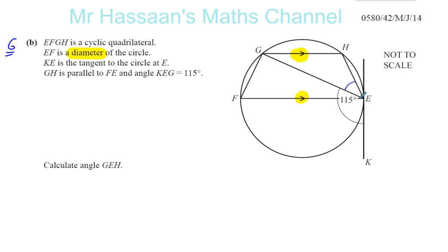That means this part is going to be 115 take away 90, which is going to be 25 degrees. 90 plus 25 is 115. So I'll just write it over there, 115 take away 90, which gives us 25.